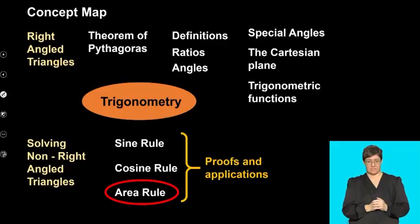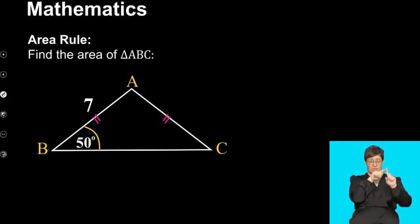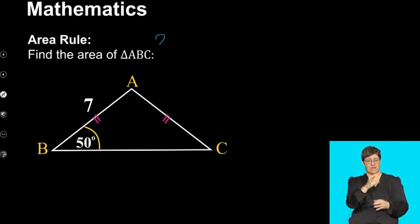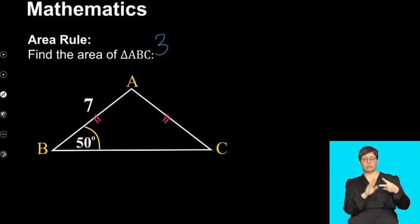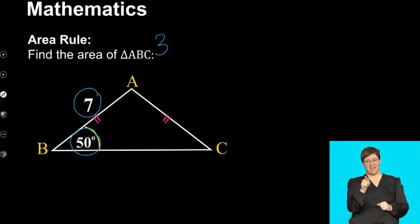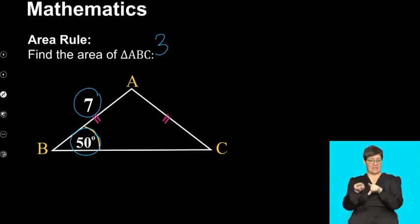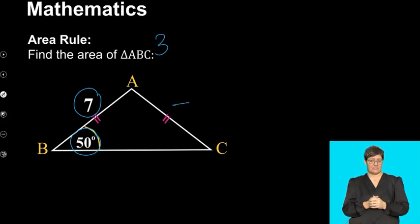Let's look at our first example. In this triangle ABC, they want us to find the area of this triangle. Remember when we're using area rule, we always need to be given three bits of information. At this moment, it looks like we only have two bits of information — we've only got one side and we have one angle. But if we examine the diagram a bit more carefully, you'll notice they've given us that side AB and side AC are equal, which means we know the length of AC. The length of AC is then seven units.